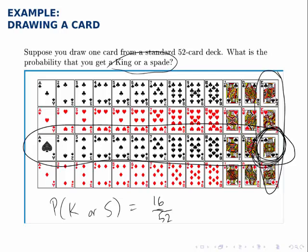So you add up the 13 spades and then add on the extra 3 kings and get a total of 16 cards. And so you get to the same answer.